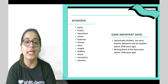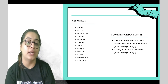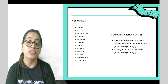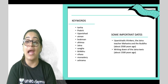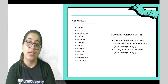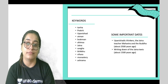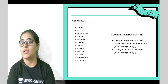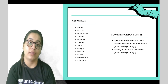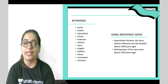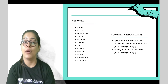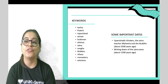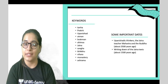Let's recall the key words very quickly: Tanha, Prakrit, Upanishad, Atman, Brahman, Ahimsa, Jaina, Sangha, Bhikkhu, Vihara, Monastery, Ashram. Some important dates: Upanishadic thinkers, Mahavira and the Buddha — about 2500 years ago. The writing down of Jain texts took place about 1500 years ago.